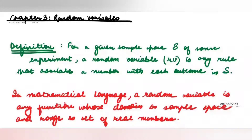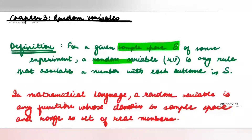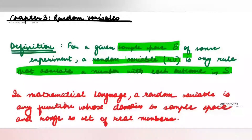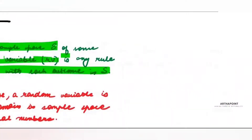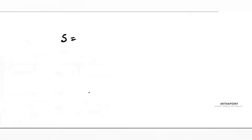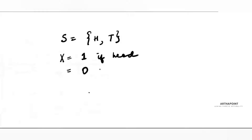Let us try and understand what a random variable is. There is a sample space S, and I define a random variable as any rule that associates a number with each outcome of the sample space. For example, my sample space can be tossing a coin — either head or tail — and my random variable can be 1 if head and 0 if tail. When I assign numbers this way, that is when it becomes a random variable.